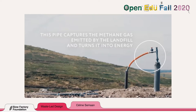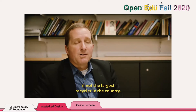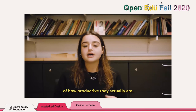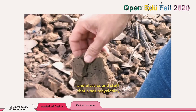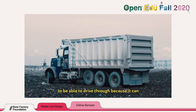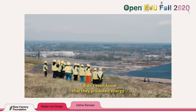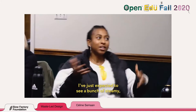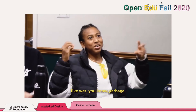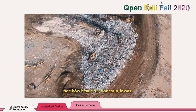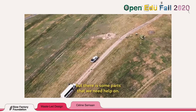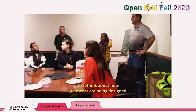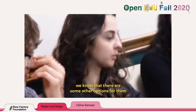We are one of the largest recyclers in the country. I left with amazement at how productive they actually are. The car goes to be recycled, but the interior foam products and plastics are not recyclable — we bring those back to the landfill. This material is actually good for trucks to drive through because it absorbs rainwater. I didn't even know they produced energy that went back into the grid. I expected to see steamy wet garbage and was so pleasantly surprised to see how beautiful and well-maintained it was. There are things we do really well, but some parts where we need help — and this is a perfect time to work with fashion and textile designers to rethink how garments are designed, so that by the time they get to us, there are options to extend their life.